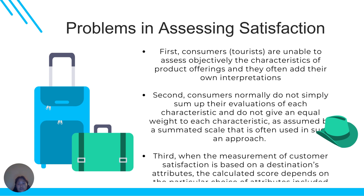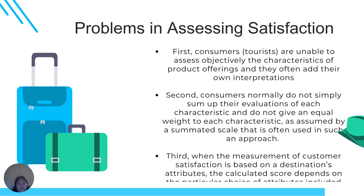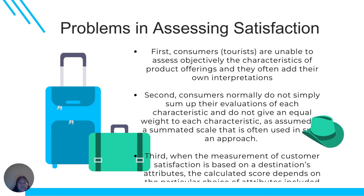The second problem is that consumers normally do not simply sum up their evaluation of each characteristic and do not give equal weight to each characteristic — so a scale is not always achieved. The third problem is that when the measurement of customer satisfaction is based on destination attributes, it must be calculated, and the score depends on the particular choice of attributes including the measurement instrument. It's important that when you do the assessment, the objective is clear and it must be calculated properly.